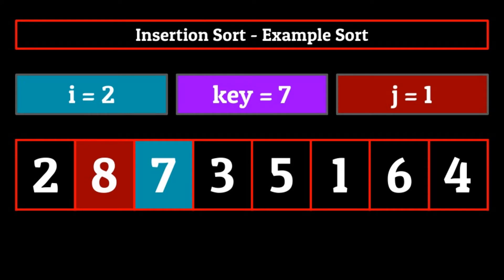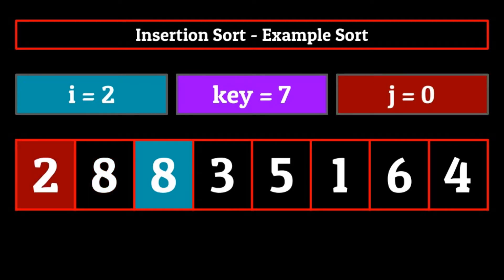We enter the while loop and compare values. The element at index location j, or eight, is greater than the key element seven. So we set the element just above j to be equal to j. Now we decrement j so that it's now zero and check again. This time the element at index location j, two, is not greater than the key element seven, so we exit out of the while loop. We replace the element at index location j plus one with seven, which completes our second iteration. Our sorted sub-list now contains the integers two, seven, and eight.